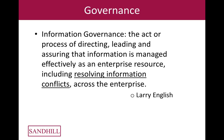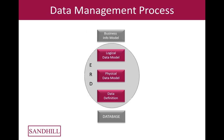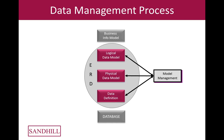We'd like to give an example of how this works in the real world — let's talk about governance. I particularly like this quote from Larry English: information governance is the act or process of directing, leading, and assuring that information is managed effectively as an enterprise resource, including resolving information conflicts across the enterprise. That notion of information conflicts is interesting. We start with our firm foundation in the data architecture world. The logical, physical, and data models fall into what we call enterprise relationship diagramming — your data models. Above that are conceptual models, and below are physical databases. The management of those models becomes the fundamental core of everything within the data architecture.